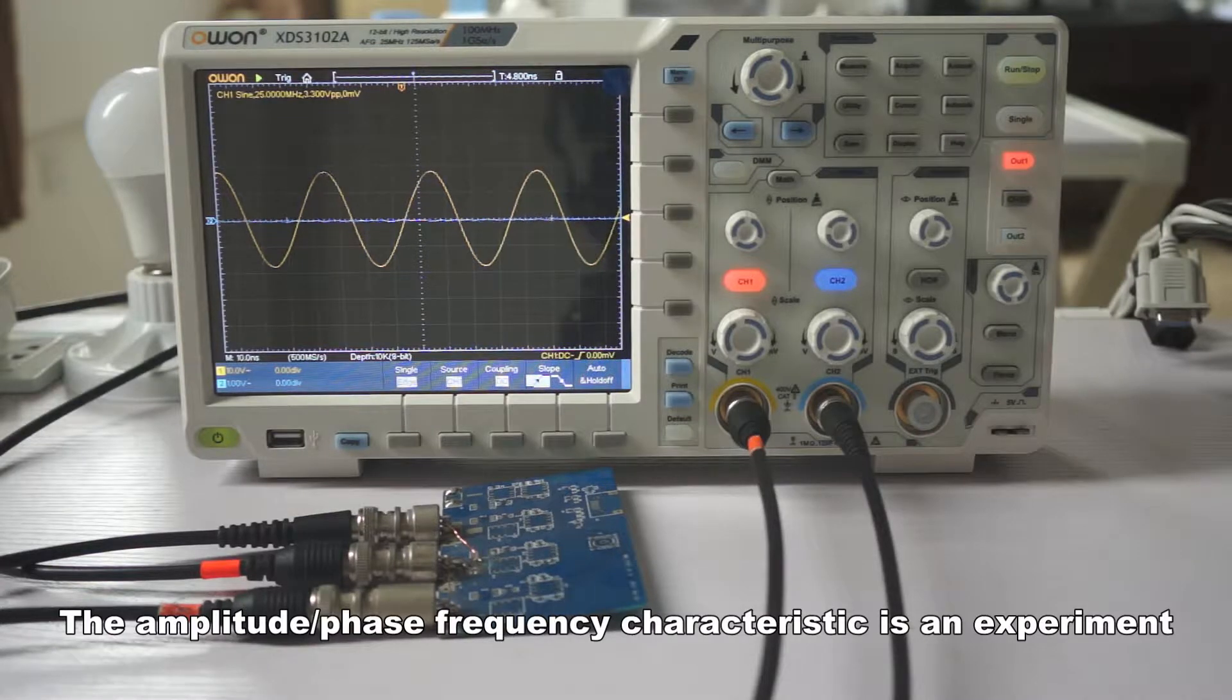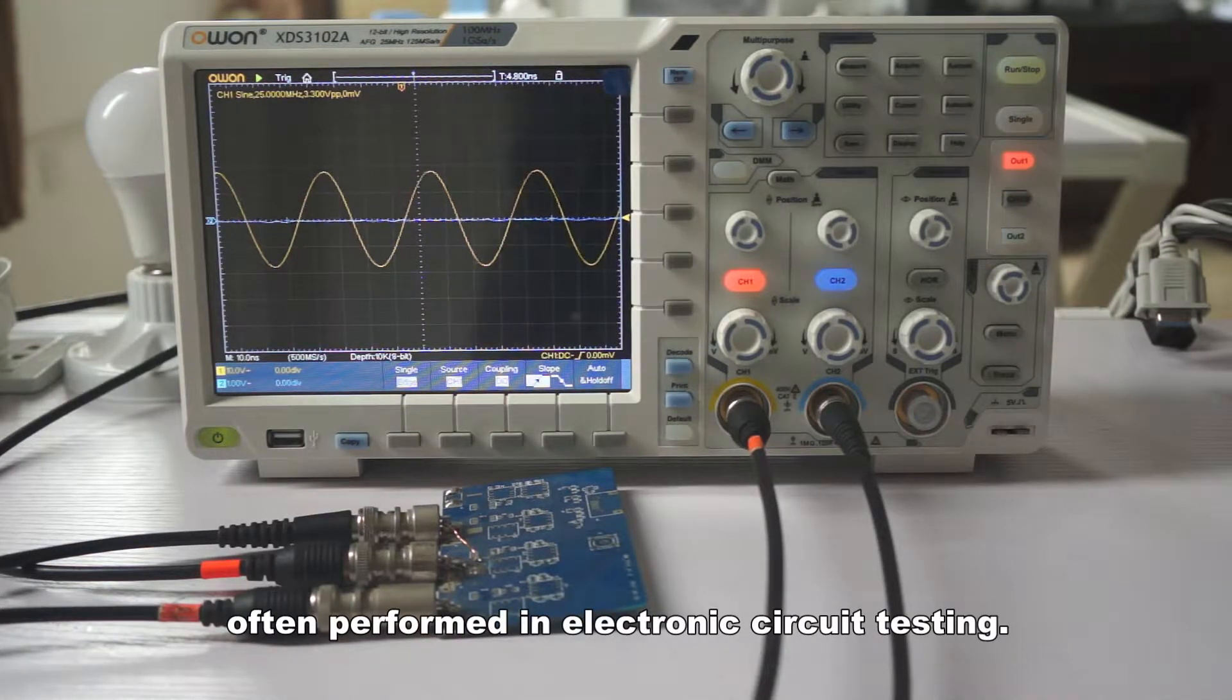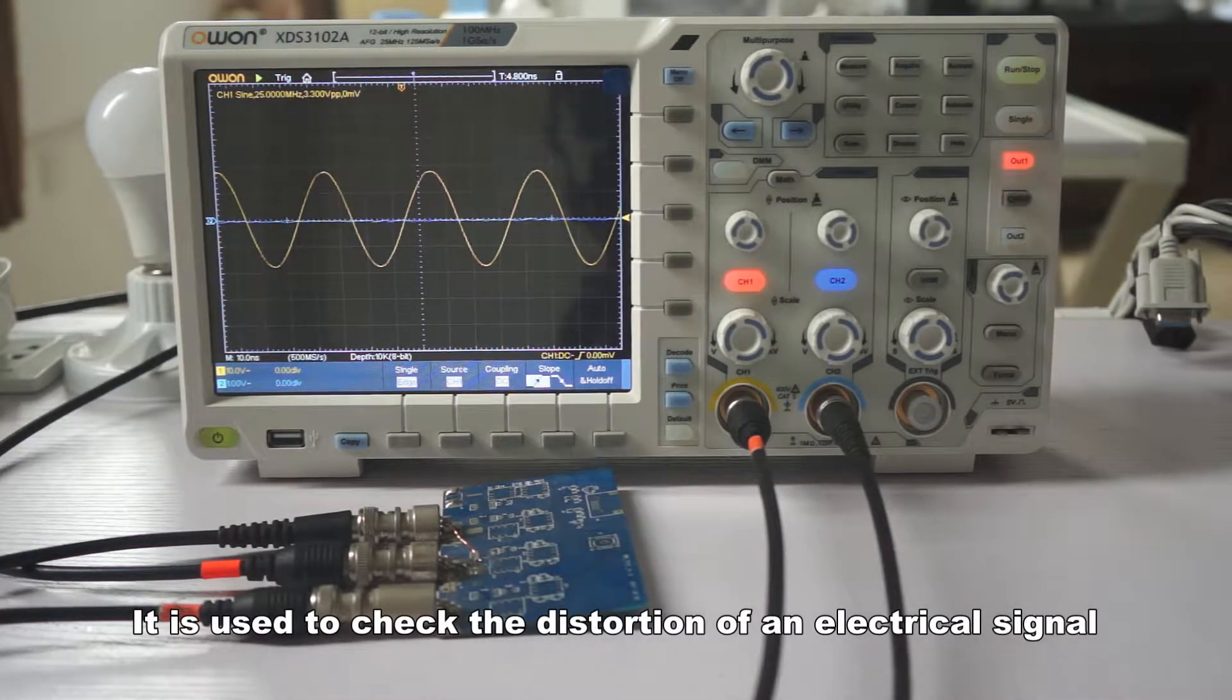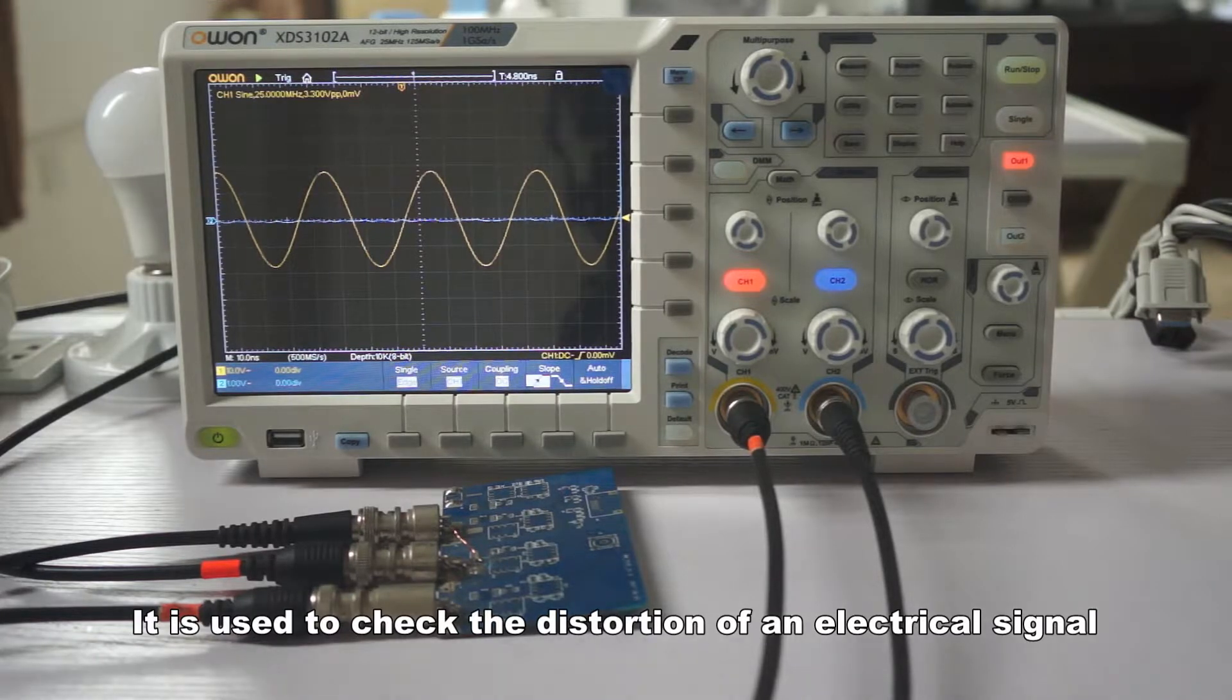The amplitude phase frequency characteristic is an experiment often performed in electronic circuit testing. It is used to check the distortion of an electrical signal during transmission.